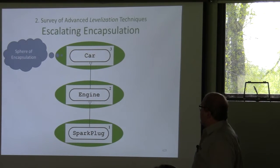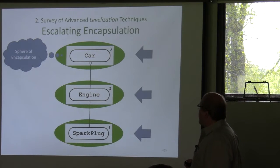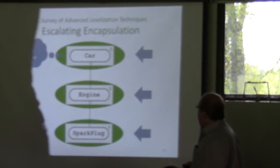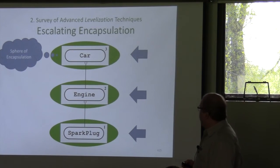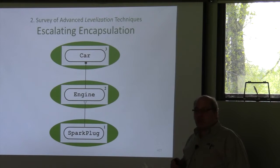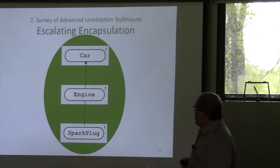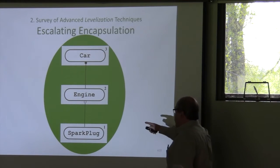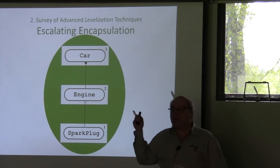This is what we call a sphere of encapsulation. The car is its own entity — each one of these things is its own entity, encapsulating its implementation. Now suppose I change this slightly and say that the car has an engine, as opposed to uses the engine in its interface — which is more realistic. A car has an engine. Now the car uses the engine in its implementation, and people using the car don't know anything about the engine or the spark plug, even though the spark plug is used in the interface of the engine.